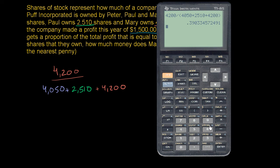And so Mary should get 0.39 of the profit. Or if we talk about it in terms of percentage, it would be 39% of the profit.